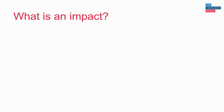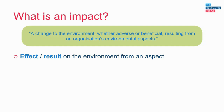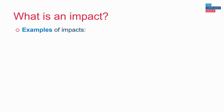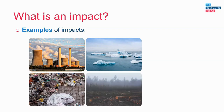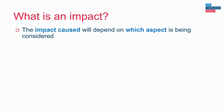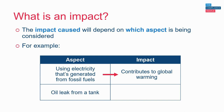As well as identifying our environmental aspects, we also need to identify the associated environmental impacts. The standard defines impacts as a change to the environment, whether adverse or beneficial, resulting from an organisation's environmental aspects — so an impact is the effect or result on the environment from an aspect. Examples of environmental impacts include air pollution, global warming, land pollution, and deforestation. For example, the aspect of using electricity generated from fossil fuels contributes to global warming, and an oil leak from a tank could cause land pollution and soil erosion.